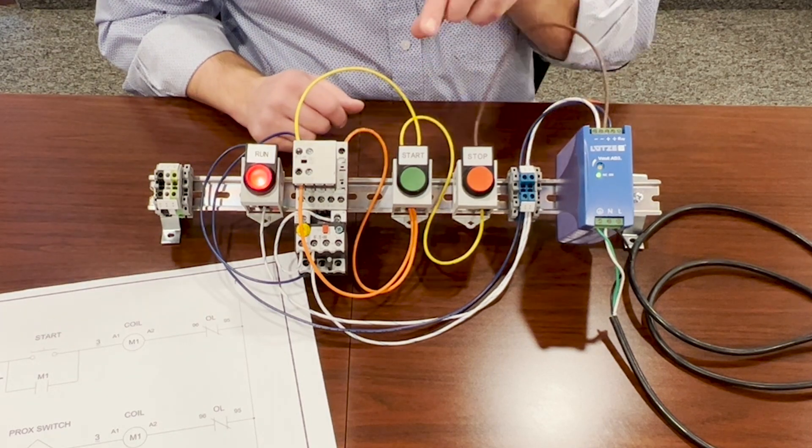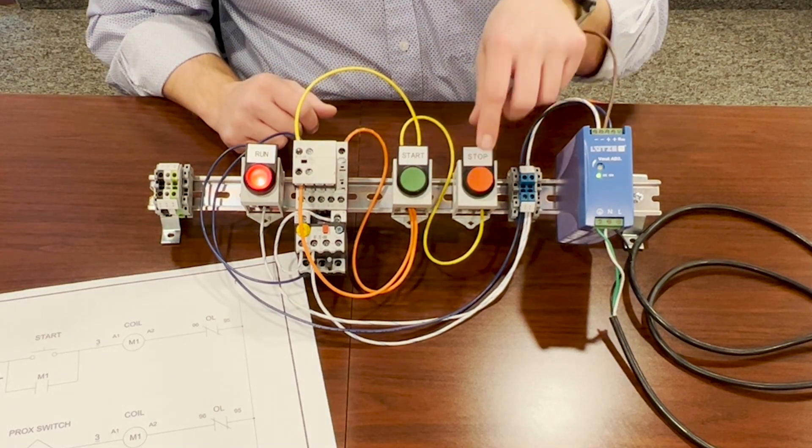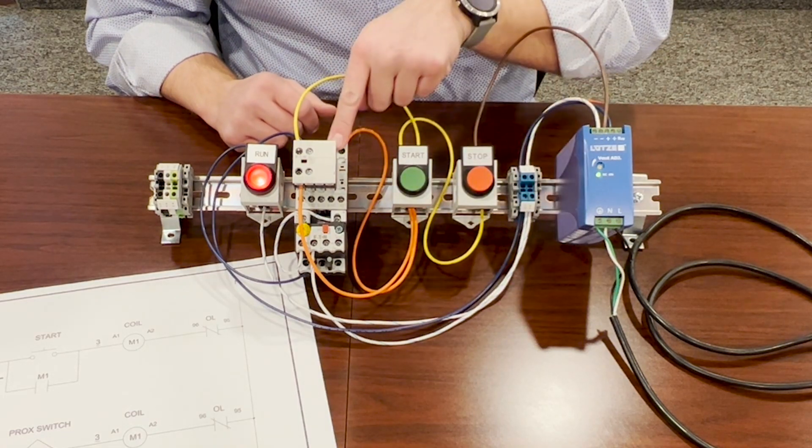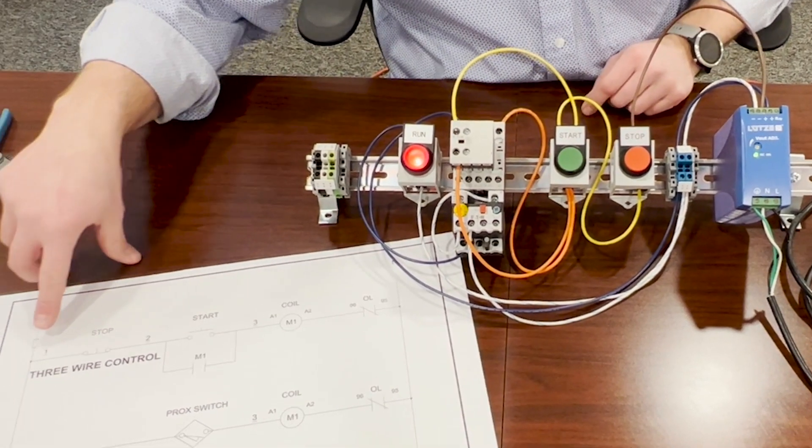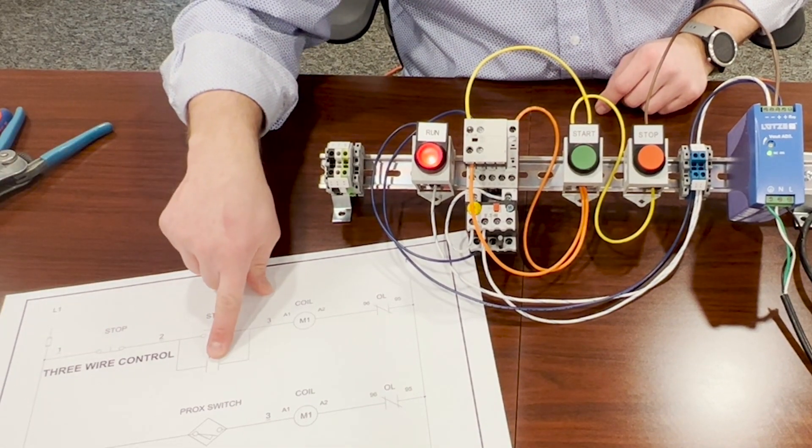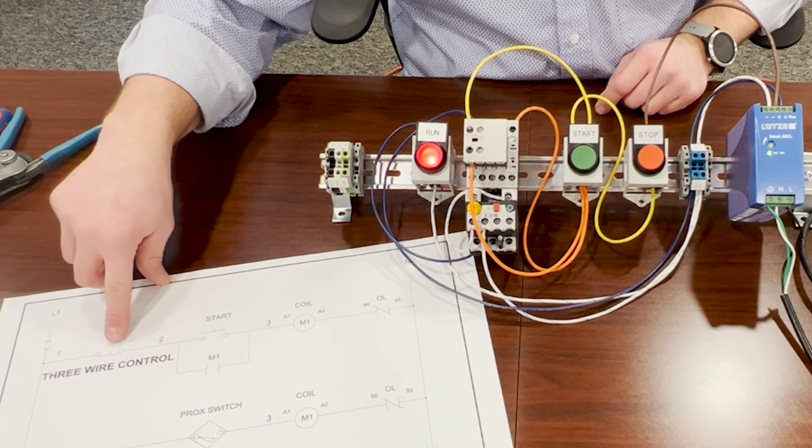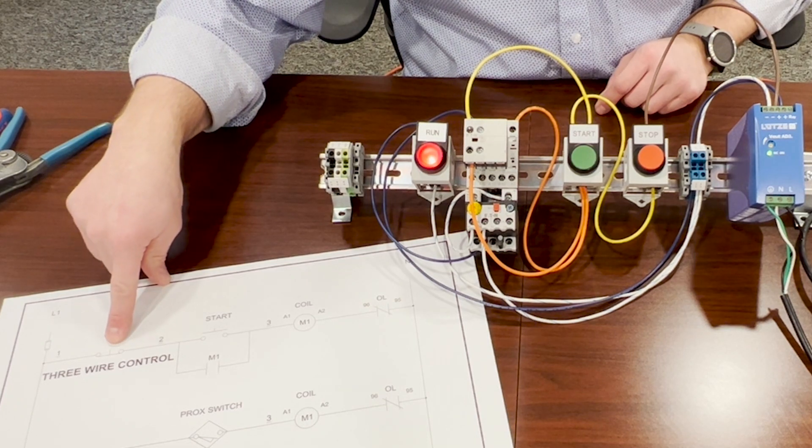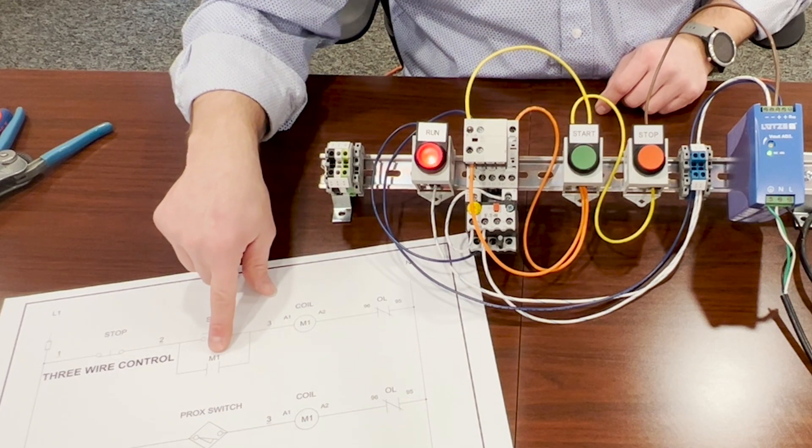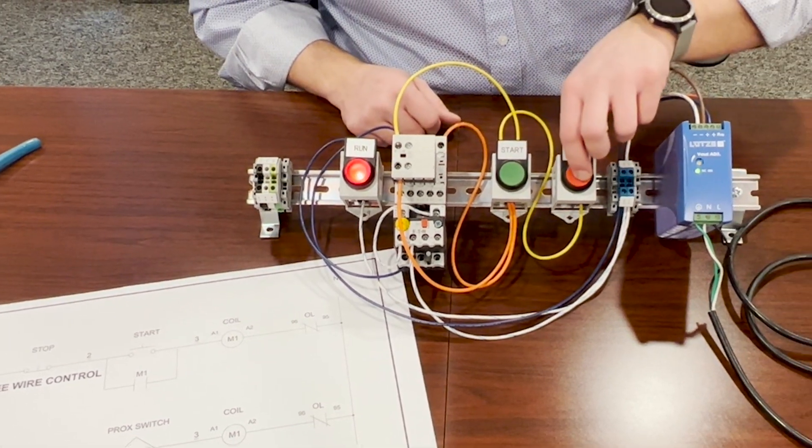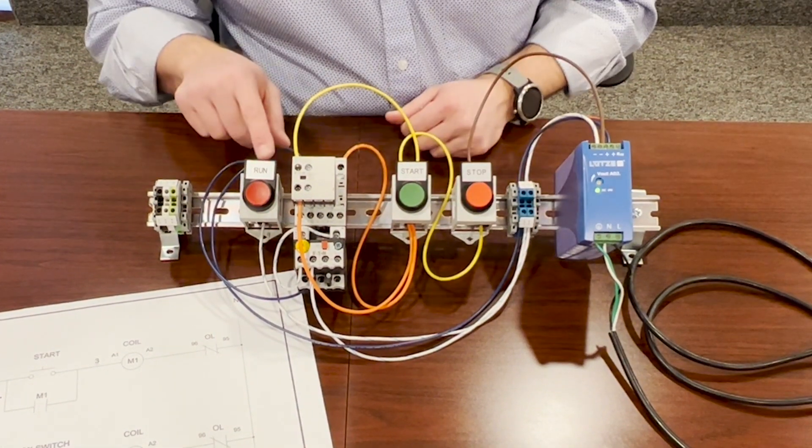So when we hit the stop button, it's going to break the 24 volts that's going to the coil and it will allow this to shut off. So on the drawing, right now this is closed. But when we push this button, it's going to de-energize the motor starter and this contact will open back up. So when we push the stop, our light turns off.